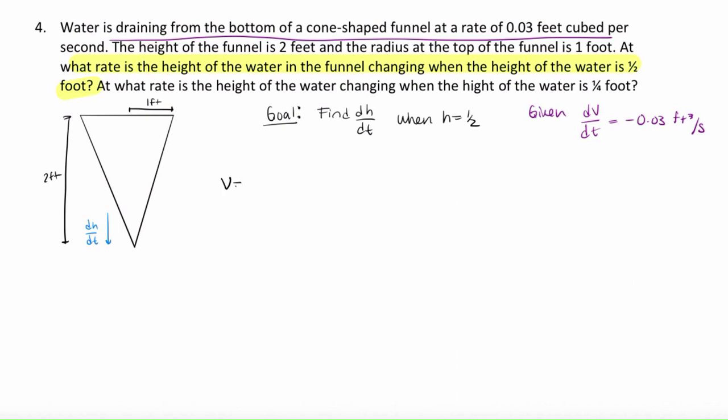So let's start with the volume of a cone. It's pi over 3r squared h. So dv over dt is pi over 3. And then here I need to apply the product rule along with implicit differentiation. So that's 2r times dr over dt plus r squared times dh over dt.